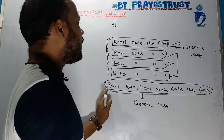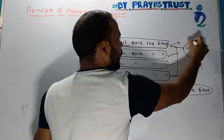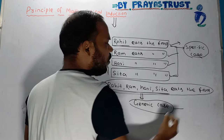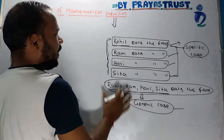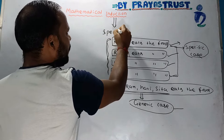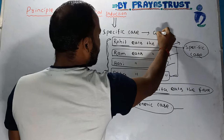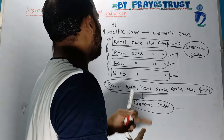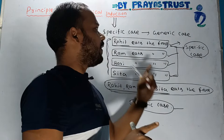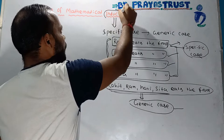That means: if something is true in every specific case, and we convert it into a generic case, then it is also true in the generic case. So in induction, we are converting specific cases into a generic case. If it is true for a single statement, the logic is applicable to the generic statement. That is induction.